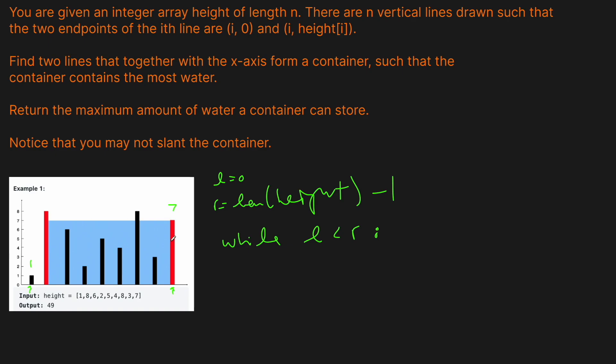And what we want to do here is we want to calculate the area that would be formed by taking these two as our box. So obviously, we're bound by the smaller height. So basically, our box here would be a height of one, but a width of eight, right? So our current best answer is going to be eight. And we'll update that in a variable holding our solution, right?